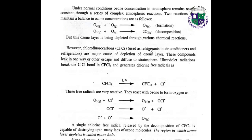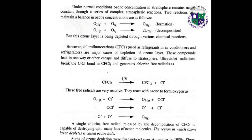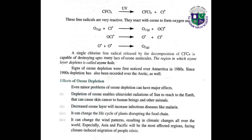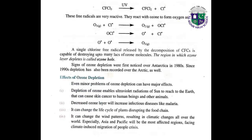Chlorofluorocarbons (CFCs) used in refrigerators and air conditioners are a major cause of the depletion of the ozone layer. These compounds leak and diffuse to the stratosphere, where, because of ultraviolet radiations, free radicals are produced. These free radicals are very reactive and react with ozone to form oxygen, as shown in this equation.